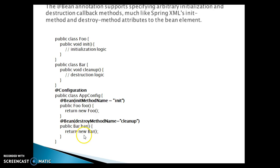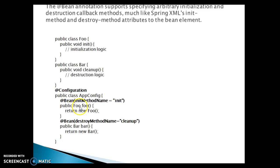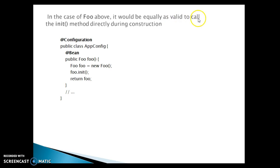We have another method called bar which returns a Bar instance, kept in the Spring container by this id. The @Bean annotation has another attribute called destroyMethodName, and here we have given the method name as 'cleanup', so the cleanup method will be called automatically. In the case of Foo, since it has an init method, it would also be valid to call foo.init() explicitly during construction in the configuration file.